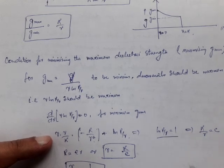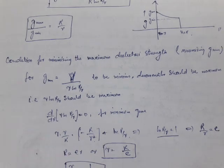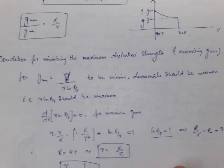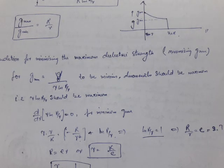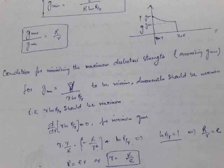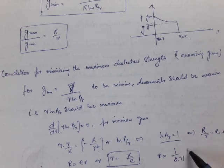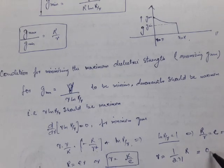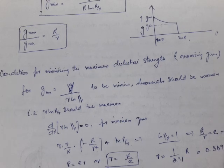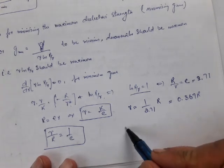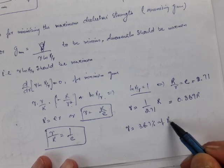This means R divided by r equals e, which is approximately 2.71. Therefore, the value of small r should equal R divided by 2.71, which is approximately 0.367R, or r should be 36.7% of R.